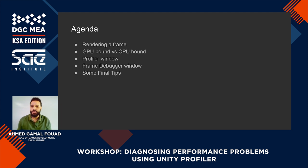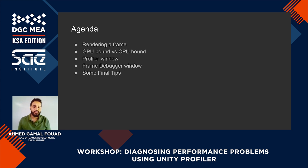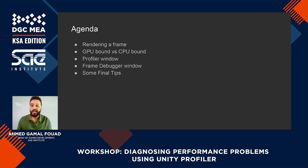Here is the agenda for today's talk. We're going to first talk about rendering a frame — what actually happens when you render a frame. Then we'll talk about GPU-bound versus CPU-bound and the difference between these two terms. Then we'll cover the profiler window and the frame debugger window, which are the tools Unity provides to understand and analyze what's happening in your game. Then we'll end the session with some final tips.